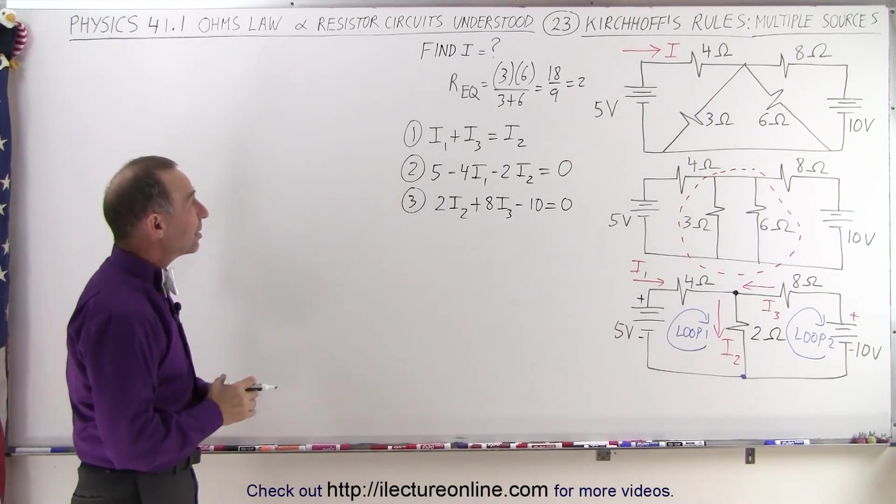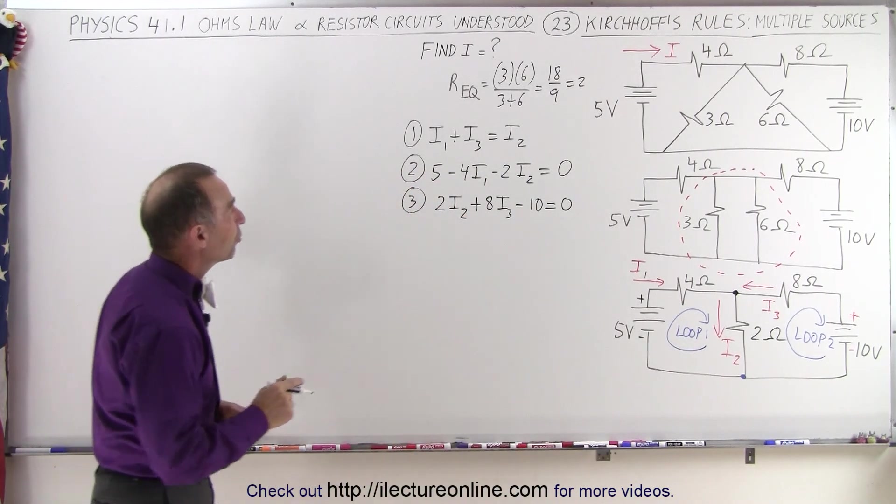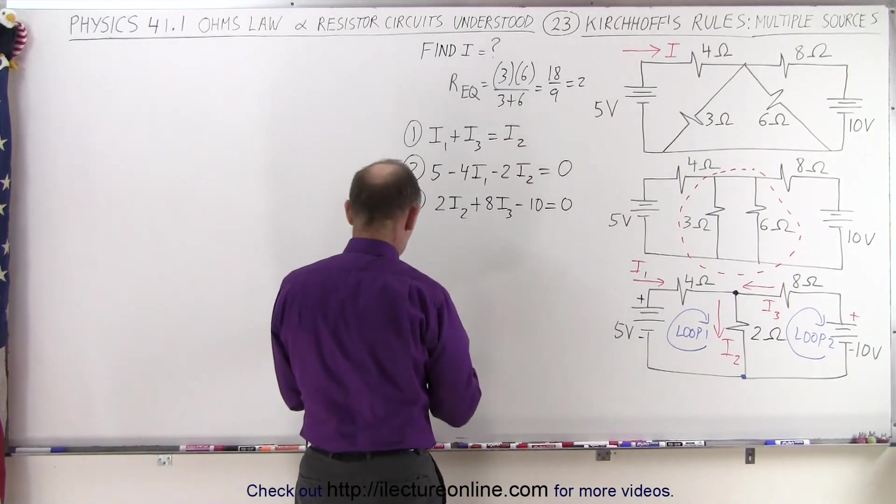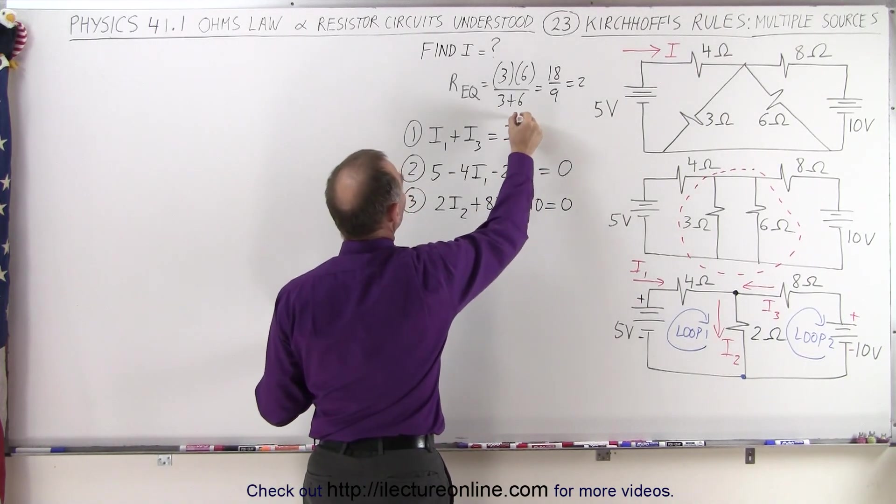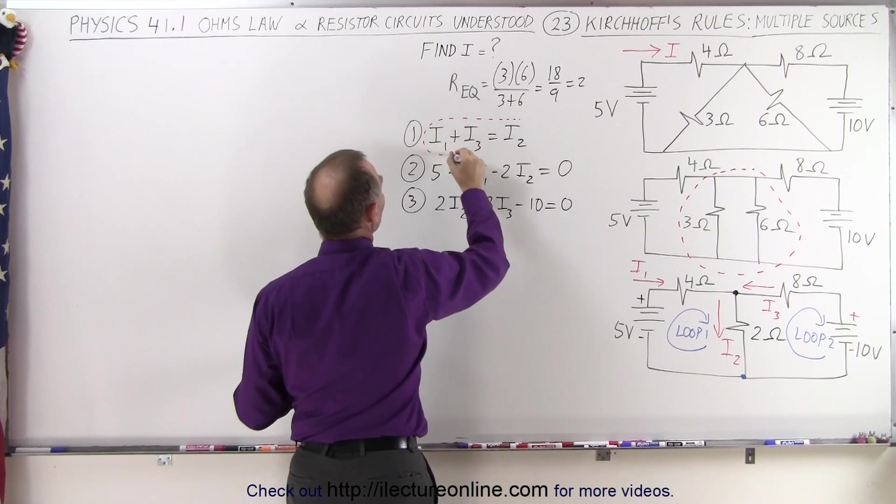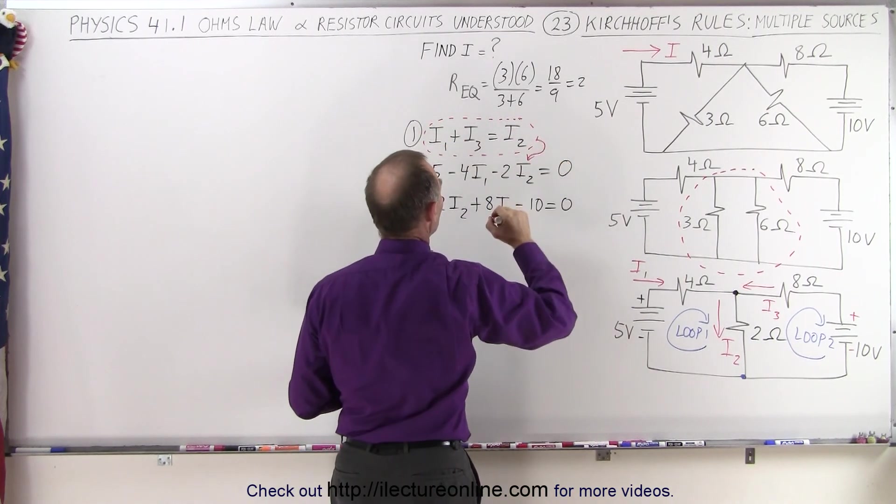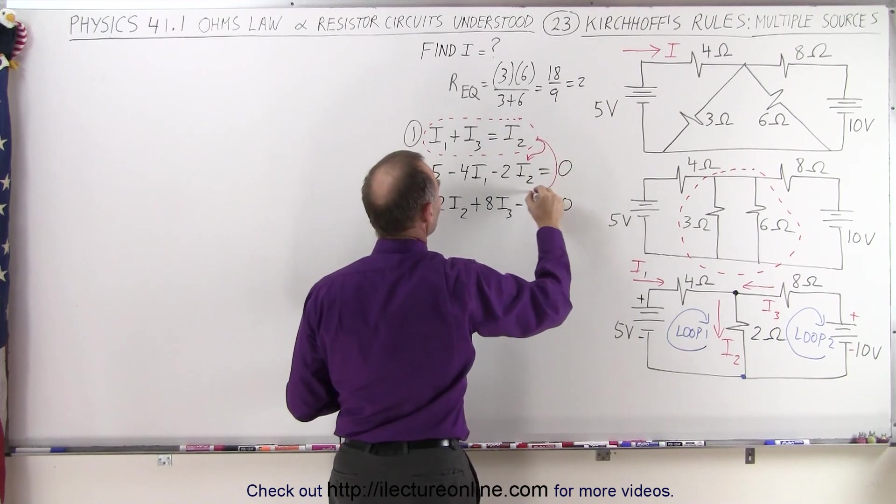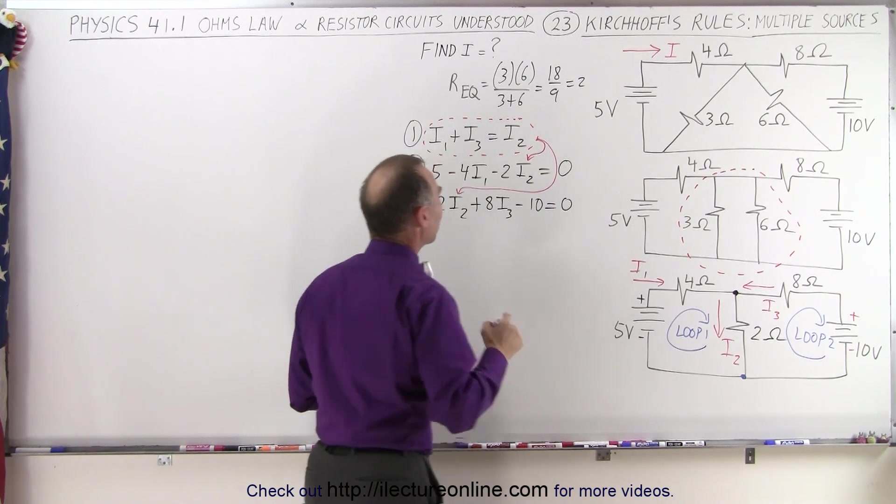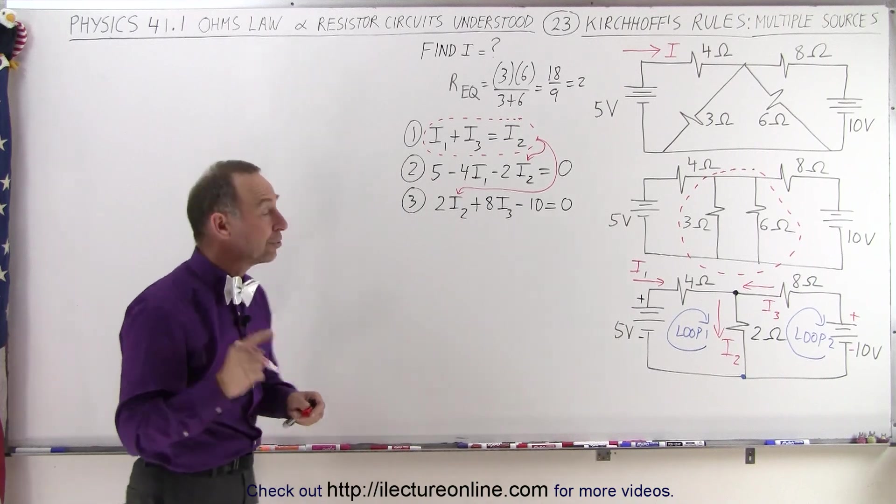Now the technique is usually always the same. Notice that we have an equation here. Here, this equation tells us that I2 is equal to the sum of I1 plus I3. So I can take that and substitute that into this equation, and substitute that into this equation. By doing so, I can eliminate I2,